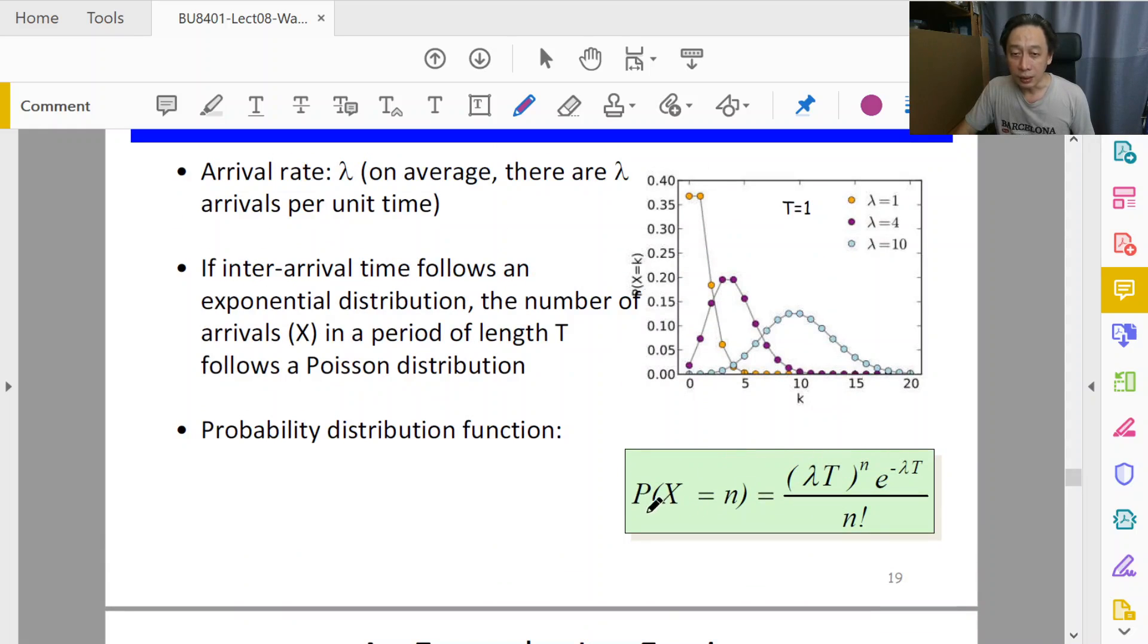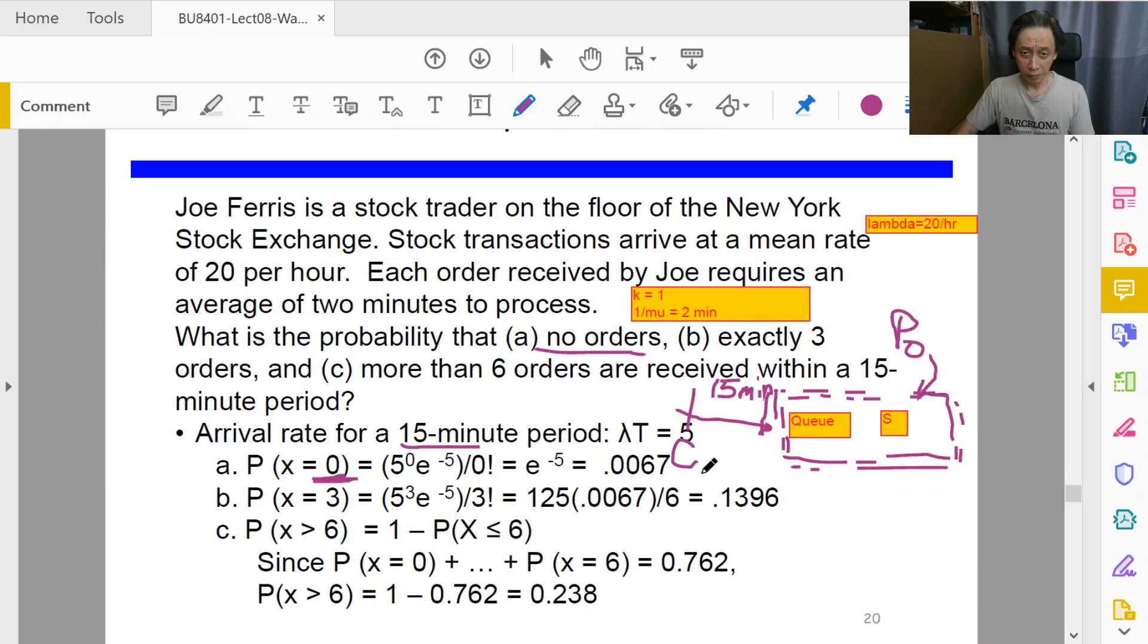The formula here gives us the probability of having n number of customers arriving within time t. Capital T is the allocated time interval. We just substitute in: lambda t is 5 because lambda is 20 times one quarter, that's 5. We substitute in the calculation and get a number like this. Then we can do the same to answer the rest of the questions - exactly three customers, more than six customers.